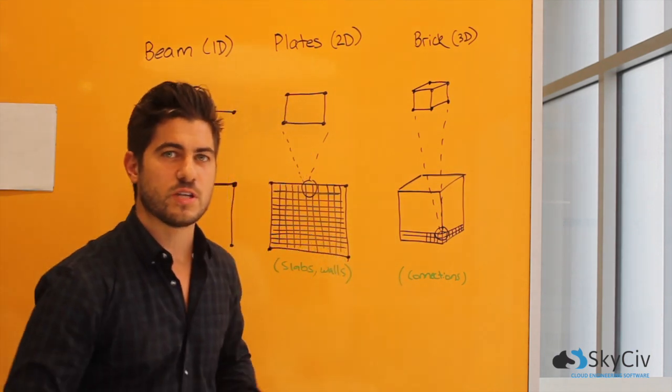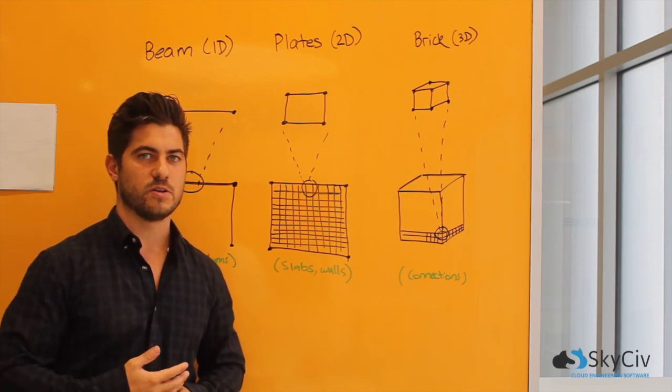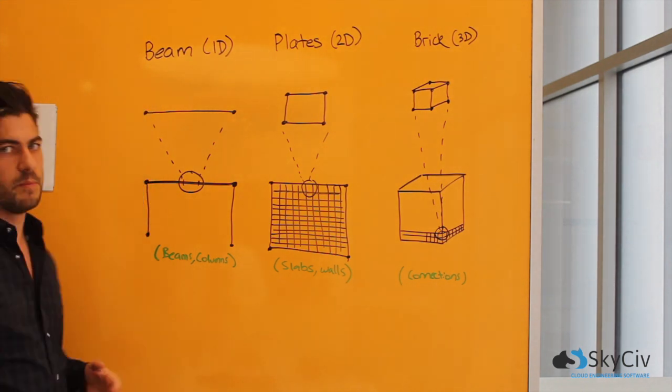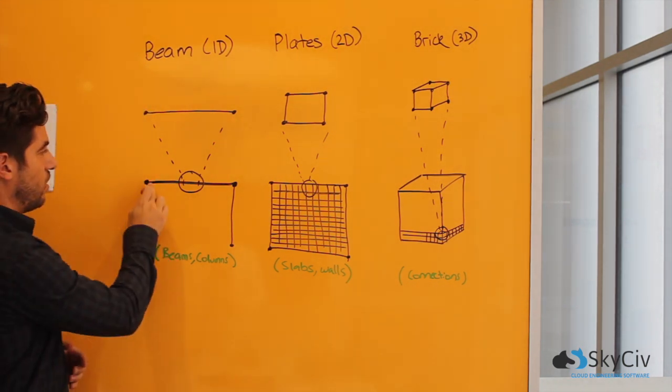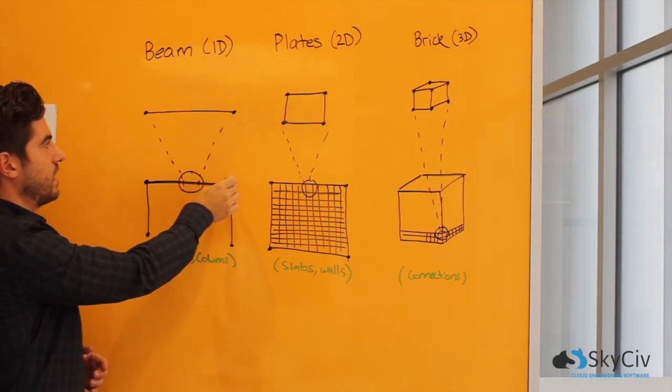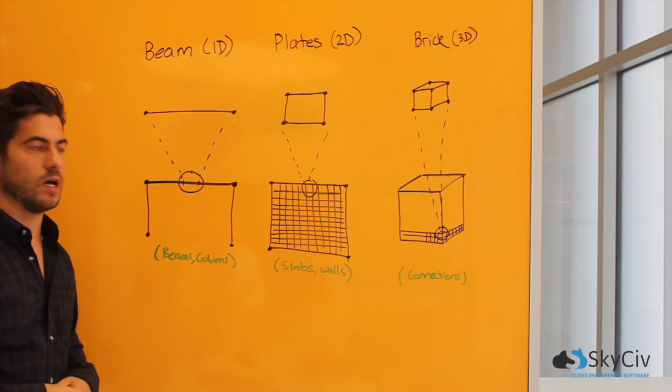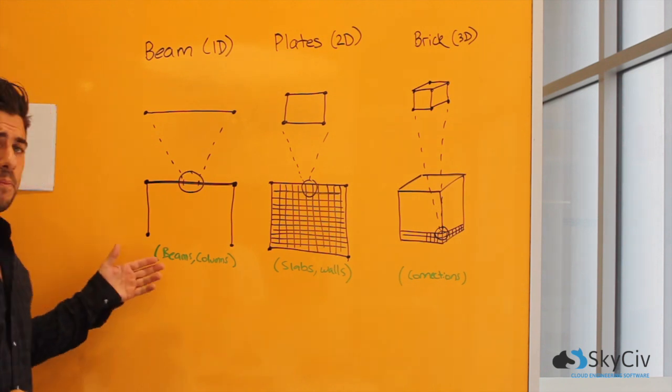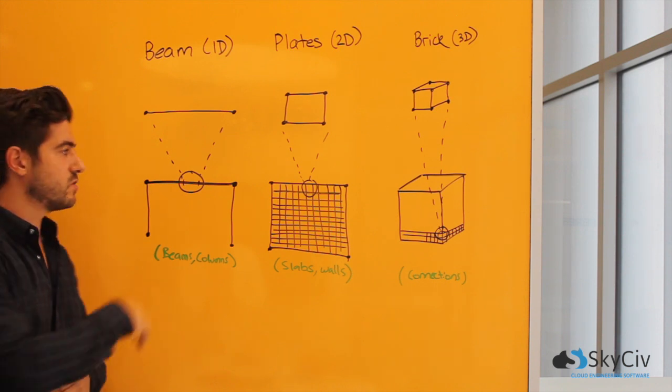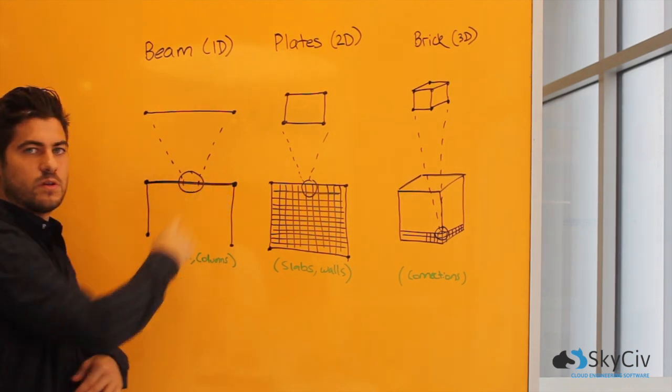Now when a structural engineer uses FEA, they can use FEA in a number of different ways, depending on the elements that they're using. So for instance, in a beam, we'll use 1D elements. So these are just a line that's been incrementally separated into smaller elements that are still linear. And this is an example that we use in the ruler. So this is typically used for beams and columns, where we don't need a huge amount of information. We just want to know what the forces are at each of the locations across the beam.